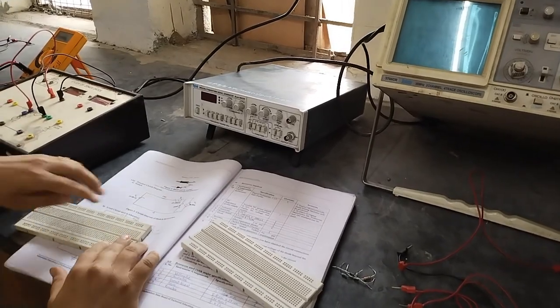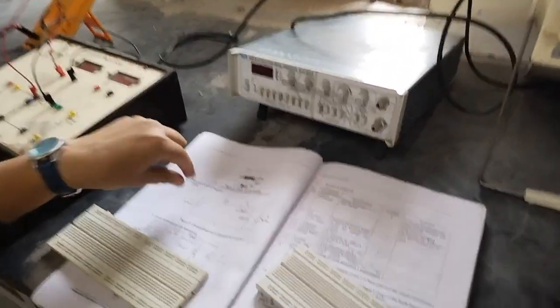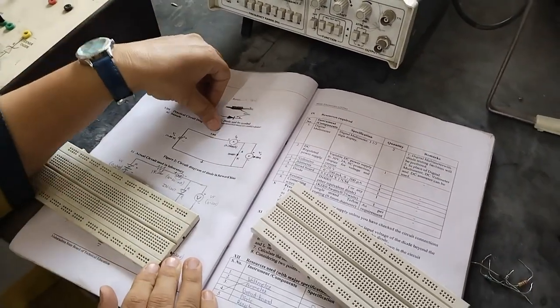This is diagram of our practical. Here we need one power supply, then resistor, millimeter, diode, and voltmeter.